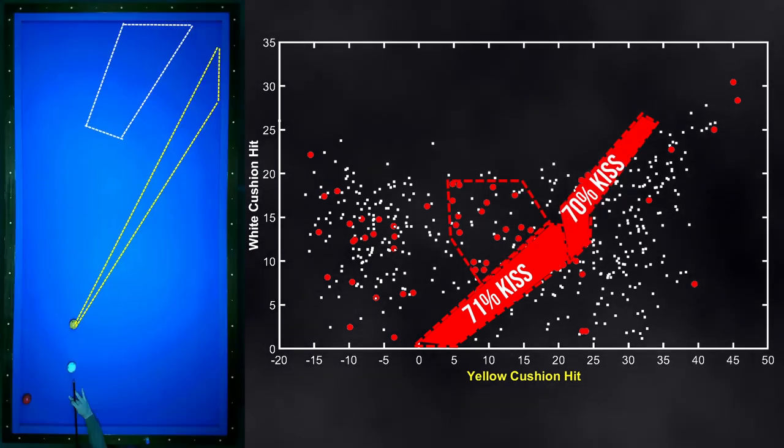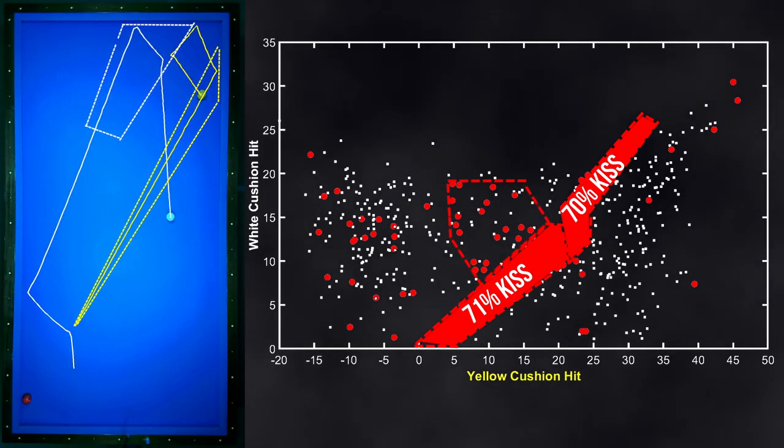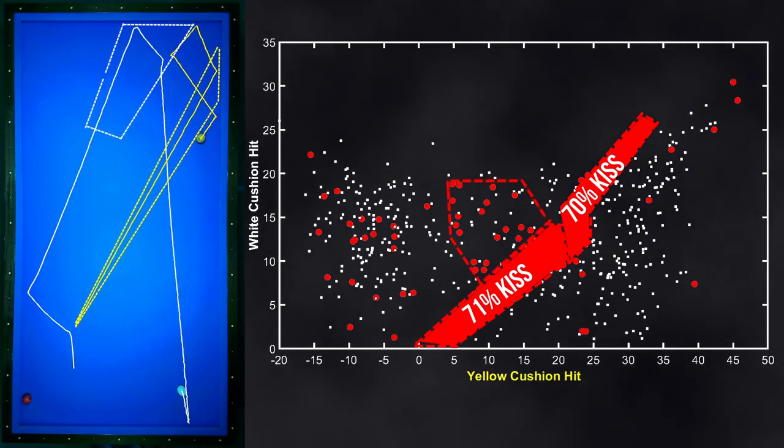The third area is very prone to kisses with 50% risk. The balls meet after the short rail in this area.